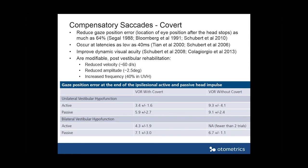Based on those studies of these compensatory saccades — these are the covert saccades that are occurring during the head rotation, which you will not be able to see unless you record the eye movement — they reduce gaze position error.